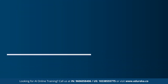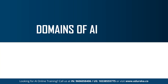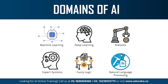Moving on to the last topic of today's session: the different domains or branches of artificial intelligence. Artificial intelligence can be used to solve real-world problems by implementing machine learning, deep learning, natural language processing, robotics, expert systems, and fuzzy logic. Recently, AI has also been applied in computer vision and image processing. These are the different branches that AI uses in order to solve problems.